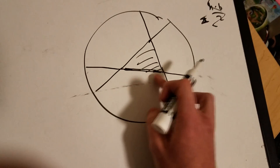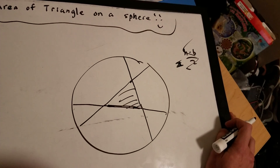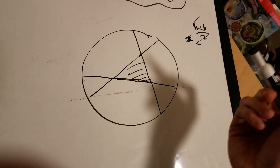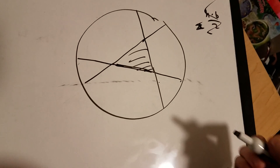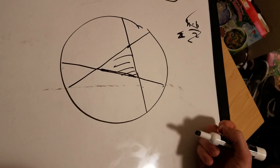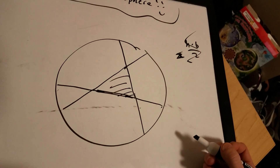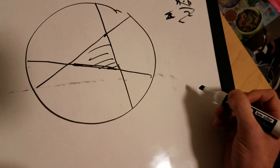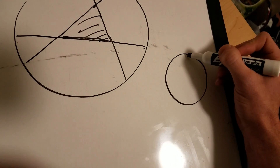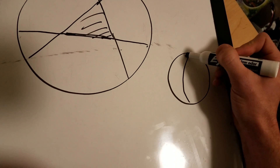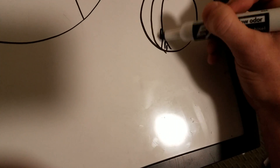So we're going to use a trick using these things called lunes, which I didn't even know what those were until someone explained it. Basically it's as if you're taking a slice out of the sphere.